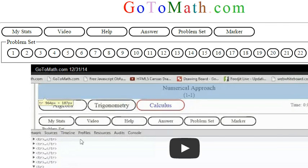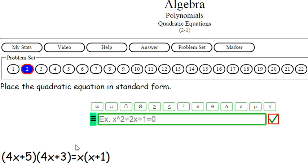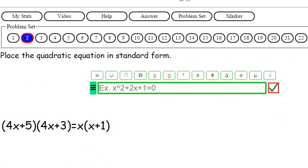Okay, we're over here at GoToMath.com. Click on the Algebra. Let's go down to Quadratic Equations and let's click on 2.1.